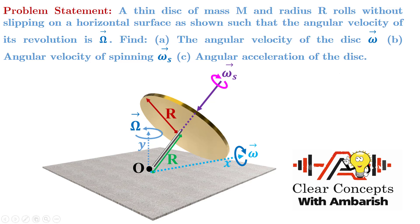What's the problem statement? A thin disk of mass capital M and radius capital R rolls without slipping on a horizontal surface as shown, such that the angular velocity of revolution is capital omega. So, this is revolving, and if it's not slipping, it will also be spinning about its own axis while the axis itself is revolving. The revolution omega is given — that is capital omega vector. We don't know the spinning omega and we don't know the omega of the rigid body — those are the things we need to find out.